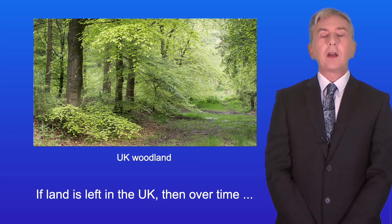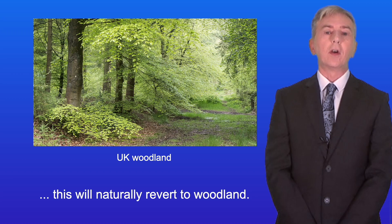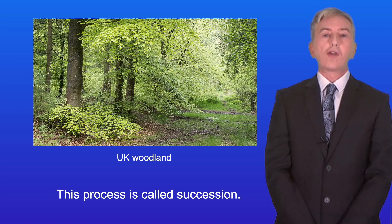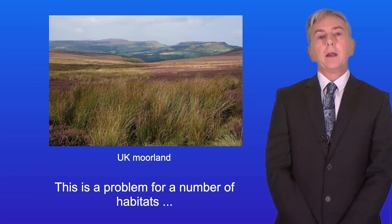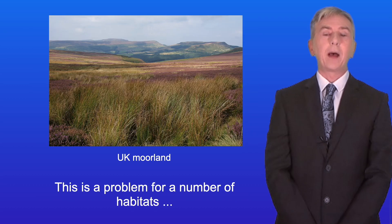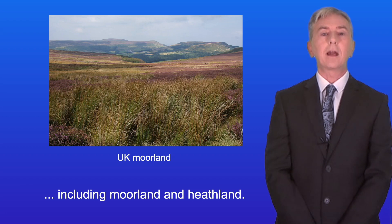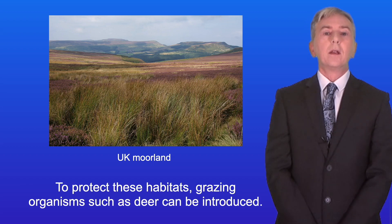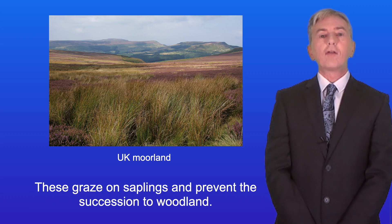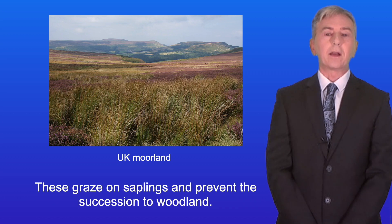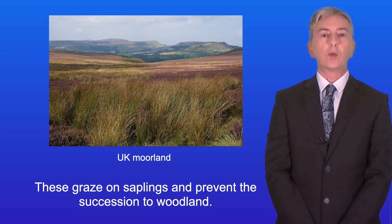If land is left in the UK, over time it will naturally revert to woodland. This process is called succession, which we look at in a later topic. This is a problem for a number of habitats including moorland and heathland. So to protect these habitats, grazing organisms such as deer can be introduced — these graze on saplings and prevent succession to woodland.